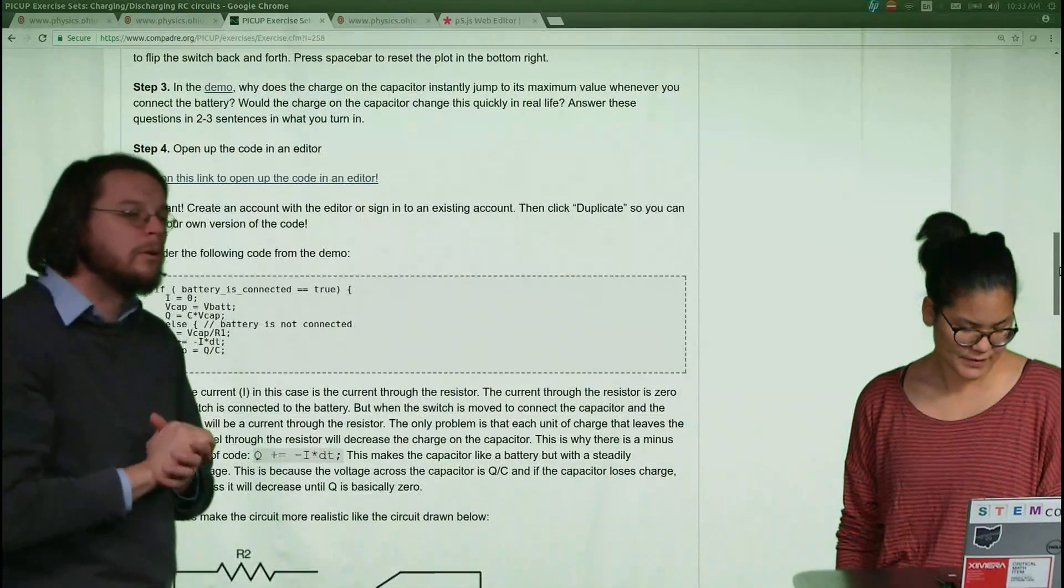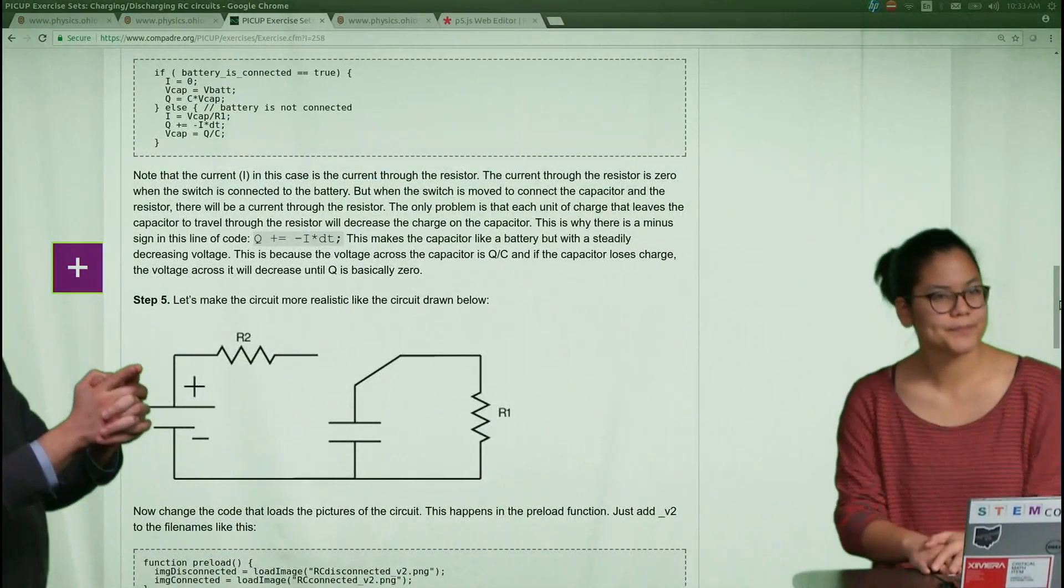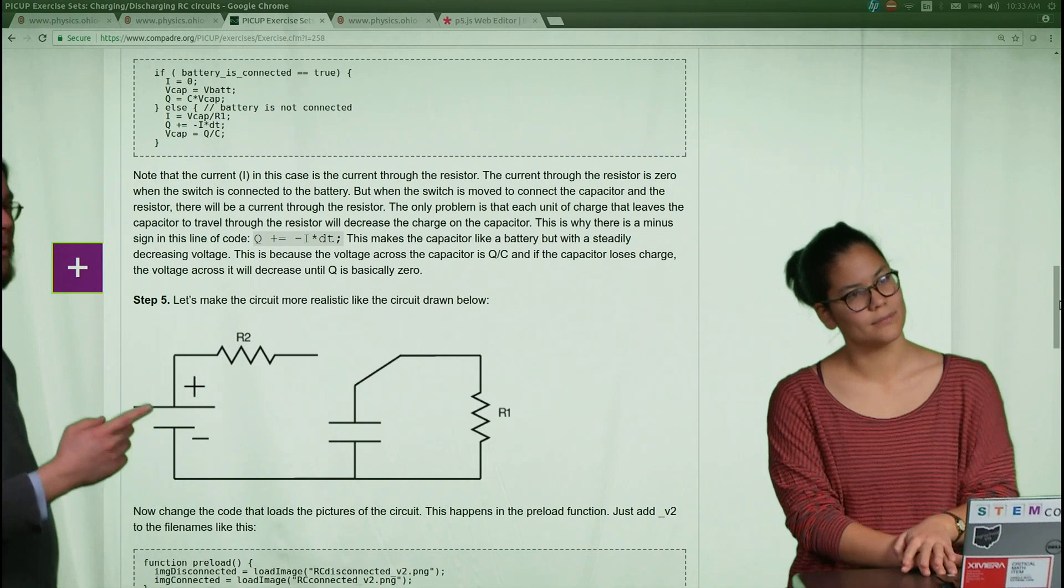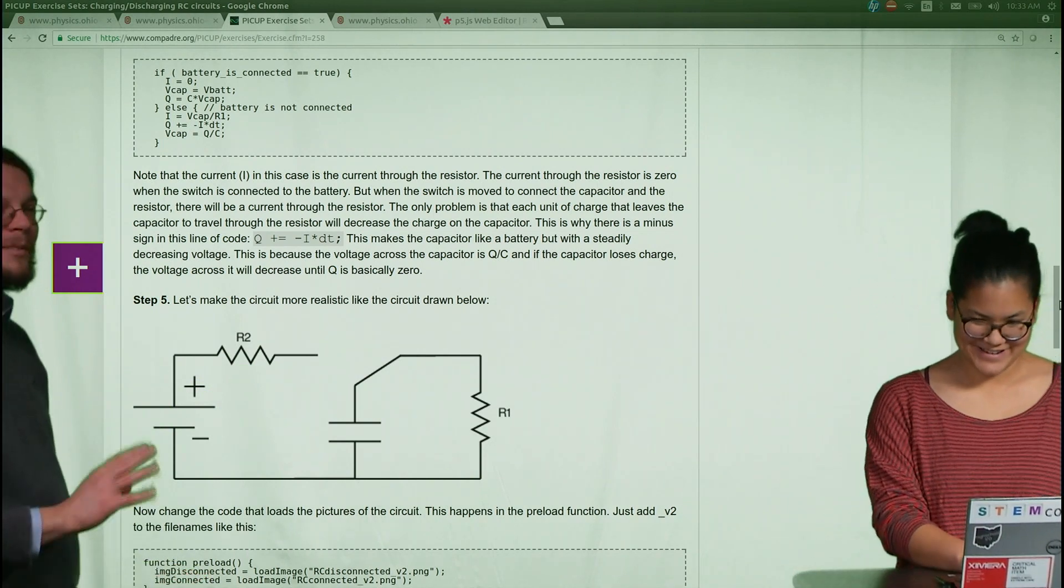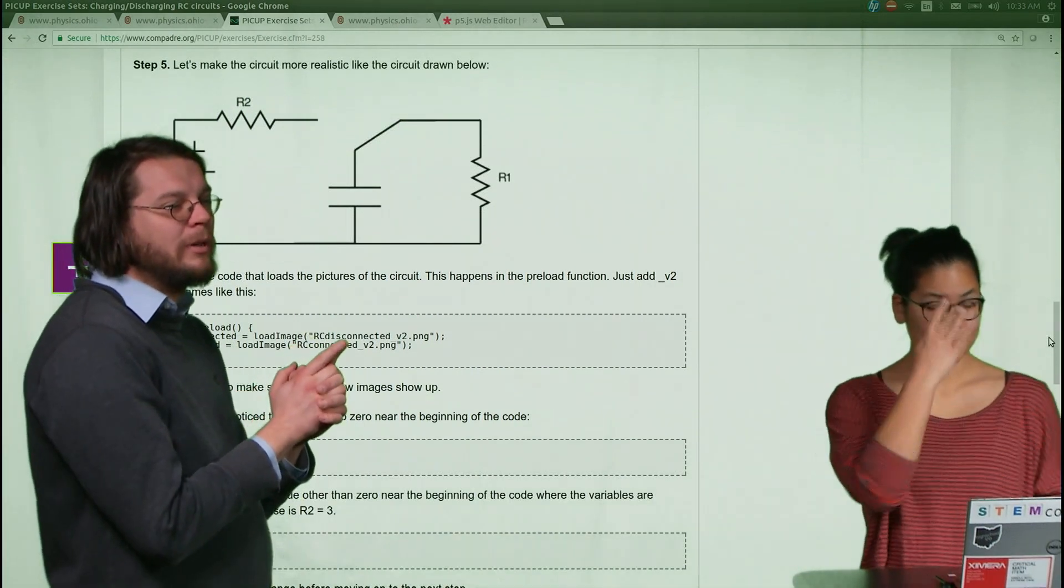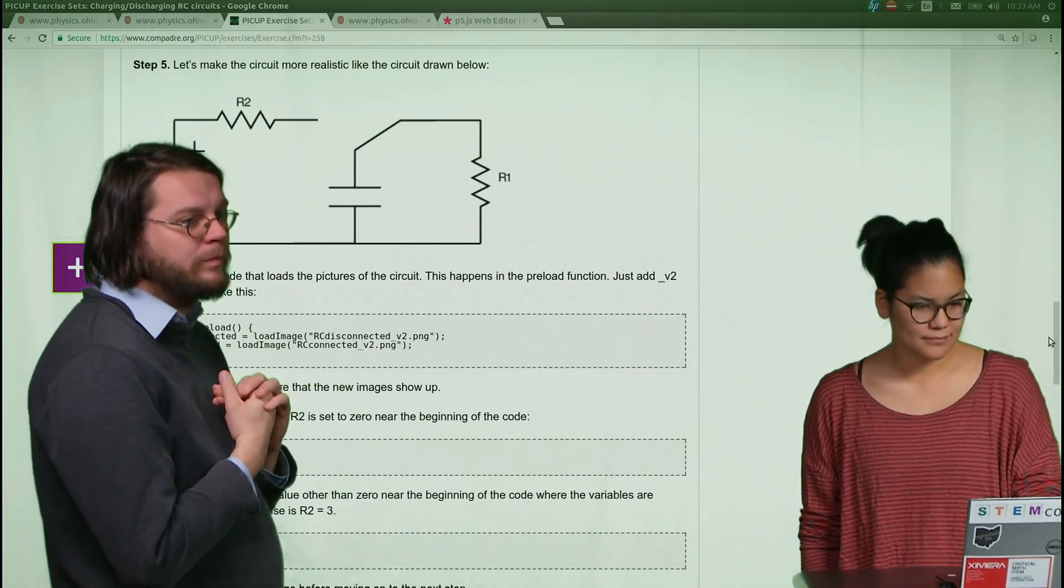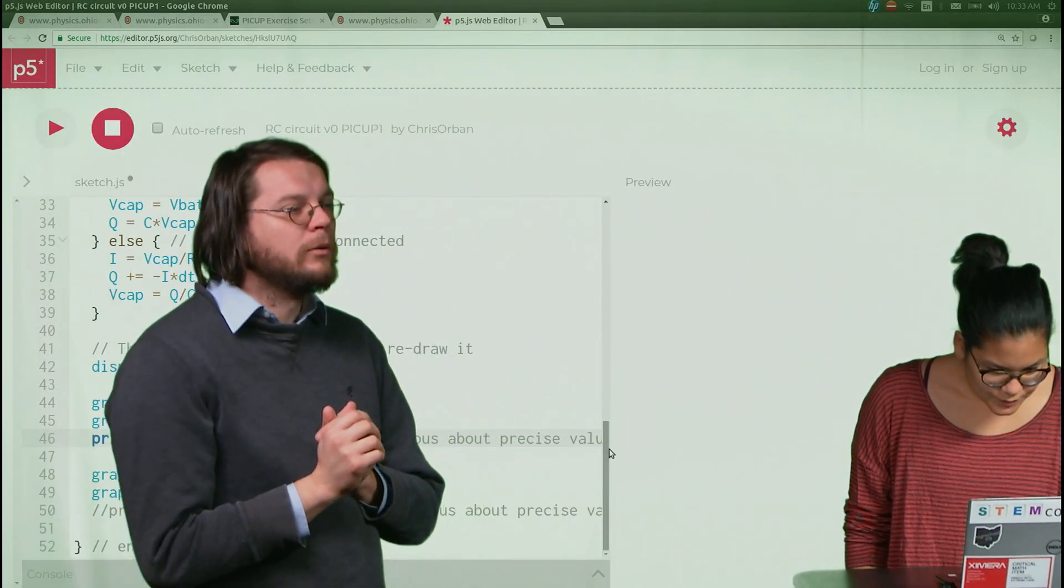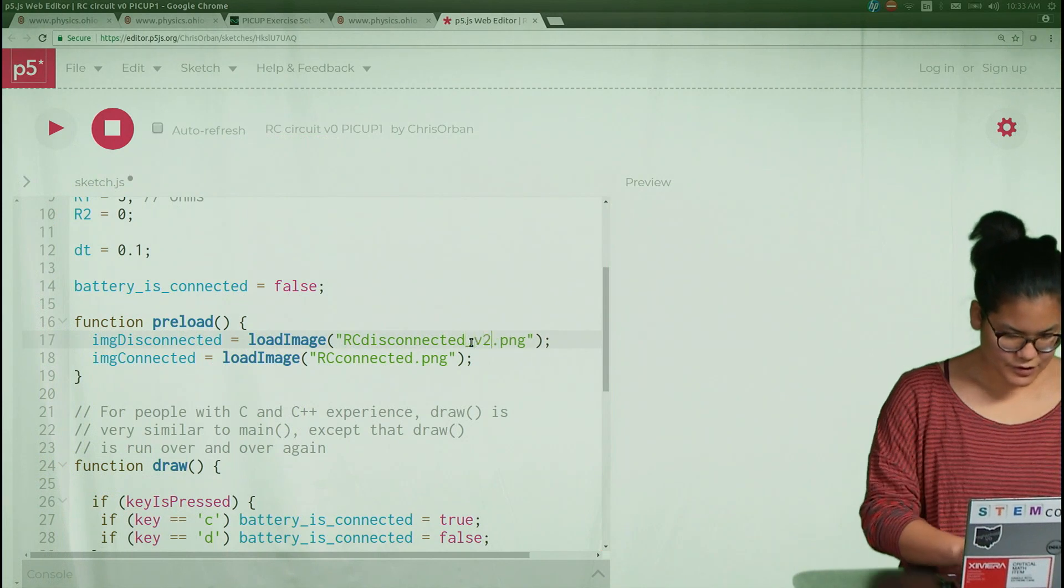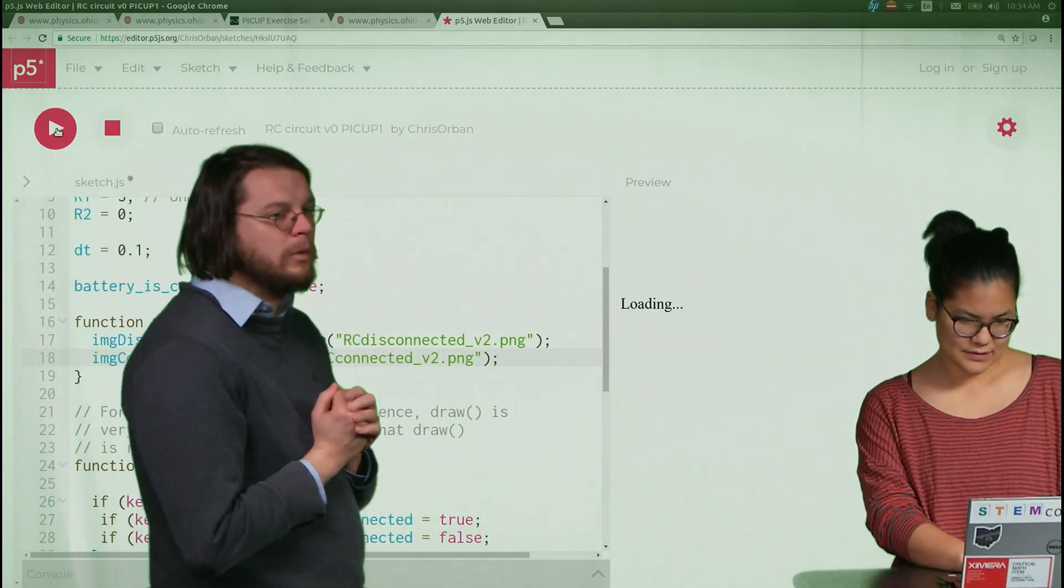I think we're ready to go to the next step. If you want to click on the tab that we were looking at before. So the goal here is to change the circuit so there's a resistor here. See that? There we go. So originally there wasn't a resistor here. We're going to call this R2. We're going to call the other one R1. The first step to changing the code so there's a resistor there is to change the picture. That's the easy part. Gotta keep your visuals maintained. So all you got to do is go into the code and just add this underscore V2 to the file extension.